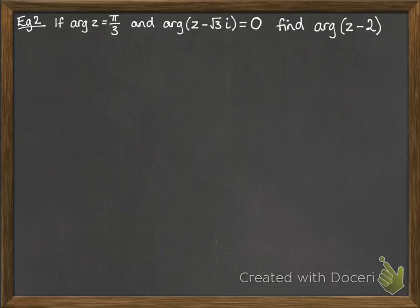Okay, if the argument of z is π/3, and the argument of z minus √3i is 0, find the argument of z minus 2. We're going to draw this to help us out. So if the argument of z is π/3, it looks like this. So z is some complex number. The angle of the vector towards z would make an angle with the real positive axis of π/3, which is 60 degrees.